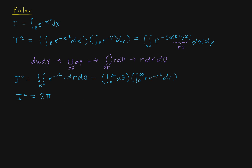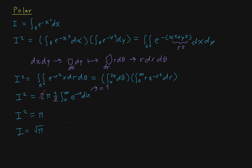For the second integral, we let u equal r squared, so du is 2r dr. We divide by 2, giving one half times the integral from 0 to infinity of e to the minus u du. This evaluates as negative e to the negative u from 0 to infinity. At infinity this goes to 0, and at 0 it's negative 1, so we get 0 minus negative 1, which equals 1. So i squared is equal to π, and taking the square root on both sides gives i equal to the square root of π, as desired.